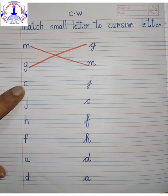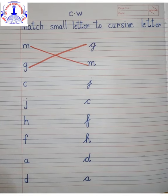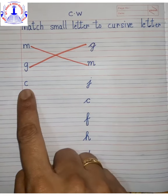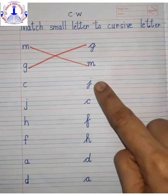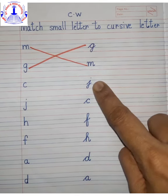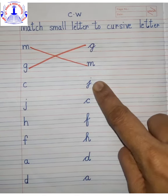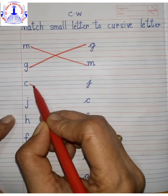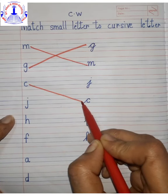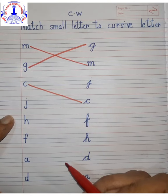Next, this is small c. Now we have to search where is cursive letter c. This is cursive letter c — this is j, but here is cursive letter c. So we are going to match c with c.